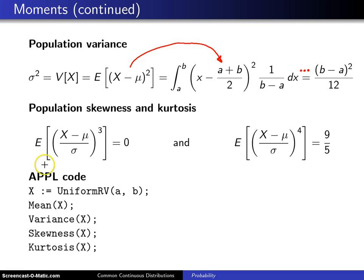Since the probability density function is symmetric, the population skewness will be the expected value of x minus μ cubed divided by σ, and that will be 0. And furthermore, the population kurtosis turns out to be 9 fifths, which is 1.8. And we have seen that 1.8 come up in the past with some of the discrete distributions.